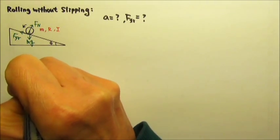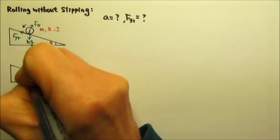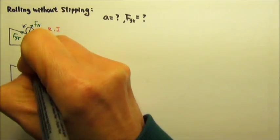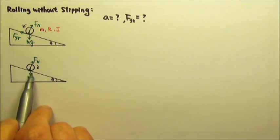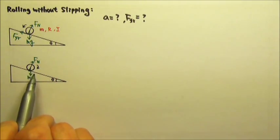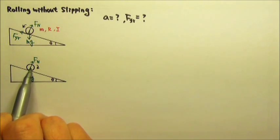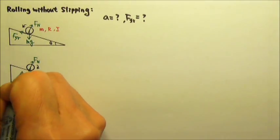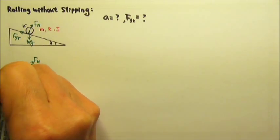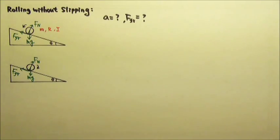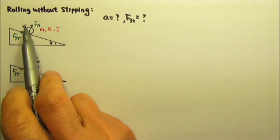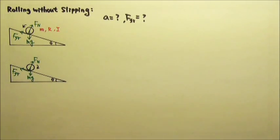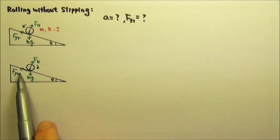We can do this for the object rolling down the incline — it will be the same. Mg acts at the center of mass, the normal force acts at the point of contact, and since this one is rolling down the incline, it still has a tendency to slide down because of mg sinθ, so friction will also go up. So whether rolling up or down the incline, in both cases the object has a tendency to slide down and therefore friction goes up.